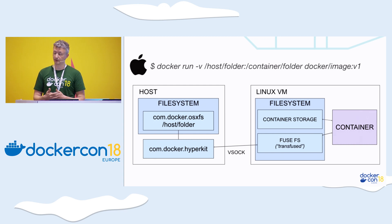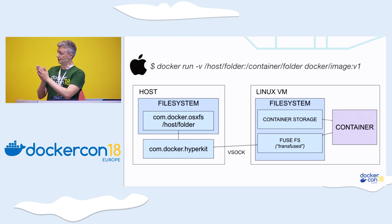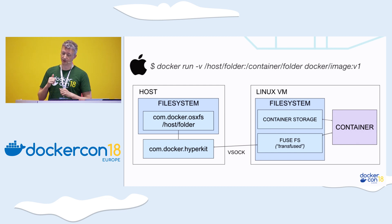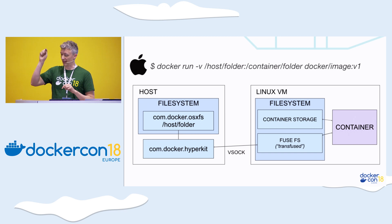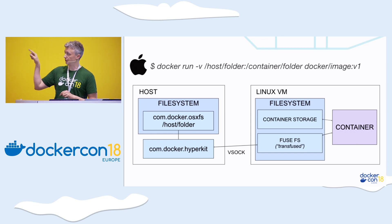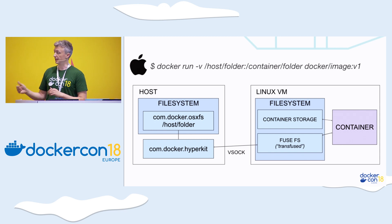What we do is use FUSE — Linux file system in user space. Whenever someone does a read call in a container on a shared volume, it goes through the Linux kernel, through the VFS, up to user space into a process called transfused. Then we send that across to the host over a hypervisor socket to the hyperkit process, which is the virtual machine monitor that helps run the VM. That one then communicates with the file system server over a Unix domain socket. As you can tell by the length of the path, there's quite a lot of latency and overhead in just doing a read or write syscall. It pipelines nicely, but if you're doing lots of sequential reads or writes it can slow down.